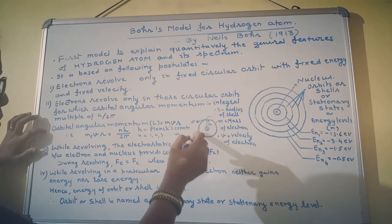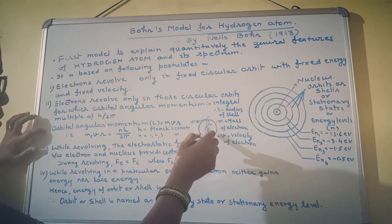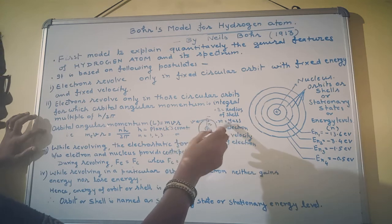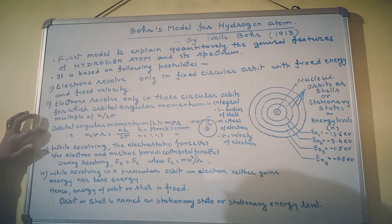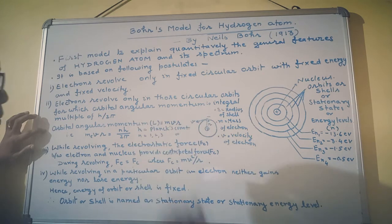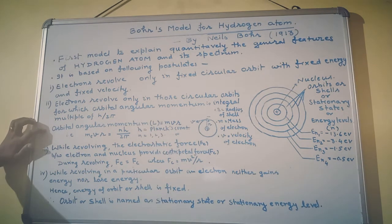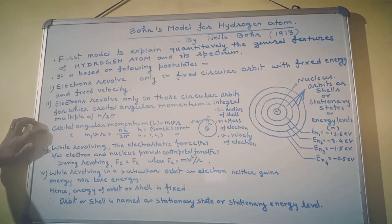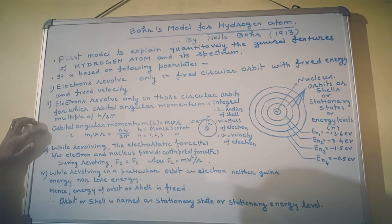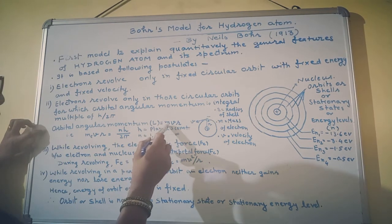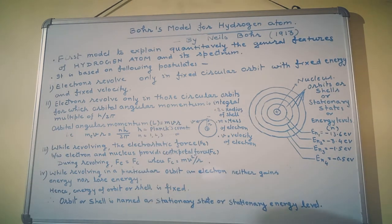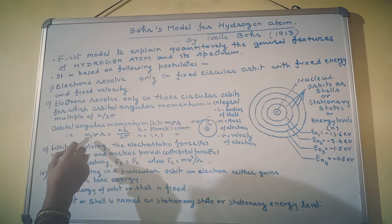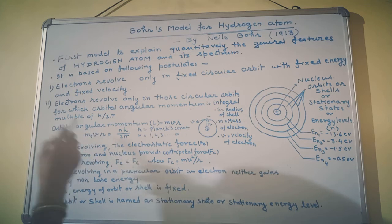Orbital angular momentum of the electron is the product of mass, velocity, and radius. That will be equal to mass times velocity times radius. The product of mass, velocity, and radius is orbital angular momentum, and during revolution this product...